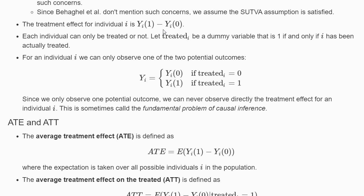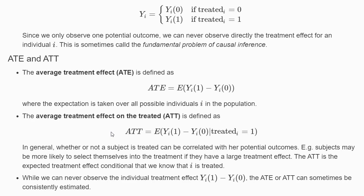Since we can never observe both potential outcomes for one individual, we cannot directly estimate the individual treatment effect. However, under suitable assumptions — such as in randomized experiments — we can estimate averages of treatment effects across individuals. One such average is the Average Treatment Effect (ATE), defined as the expected difference E[Yi(1) − Yi(0)] taking the expectation over all individuals in the population.